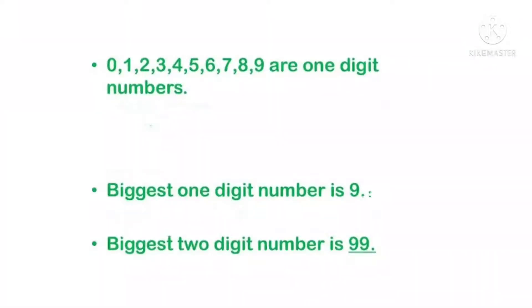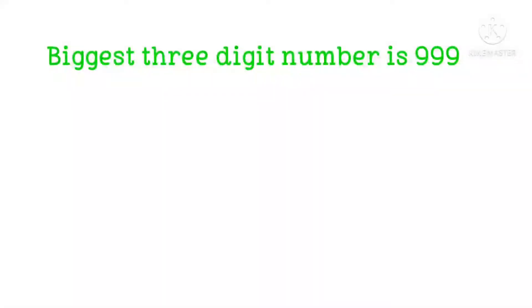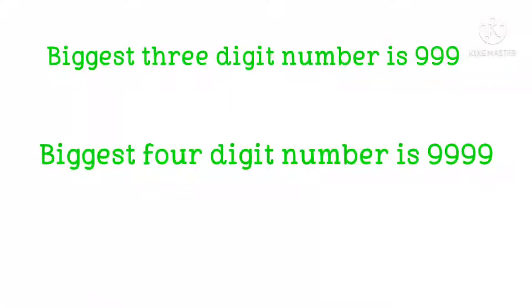What is the biggest one-digit number? A one-digit number has only one digit: 0, 1, 2, 3, 4, 5, 6, 7, 8, 9. So nine is the biggest one-digit number. The biggest two-digit number is 99. The biggest three-digit number is 999. And the biggest four-digit number is 9,999. It goes on like that.